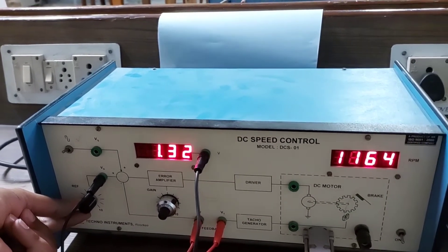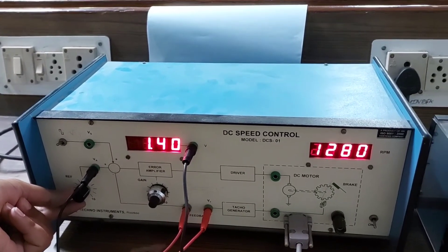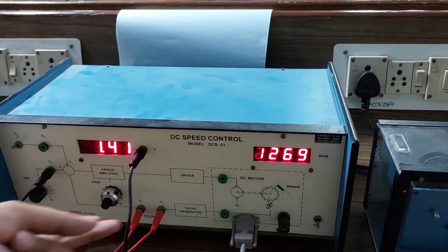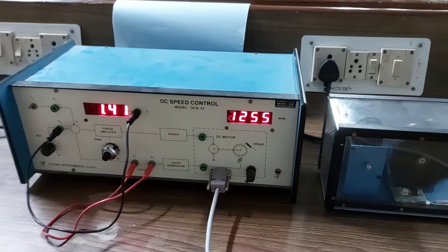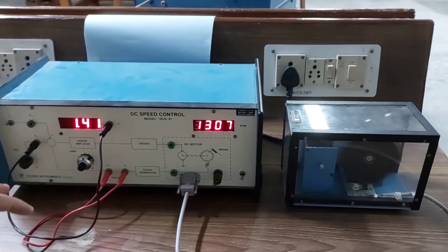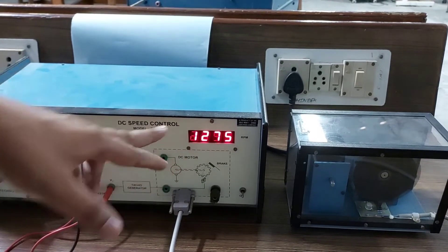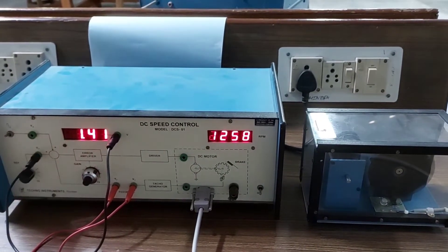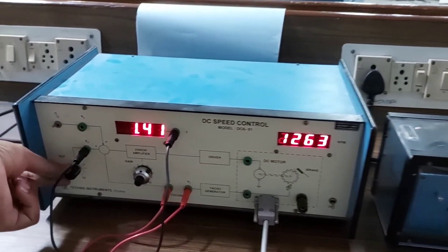As we increase the rotation of the knob, the corresponding RPM also increases. In this practical we are going to prove that when the RPM is 1275 and the reference voltage is 1.40 volts, if we decrease the V reference voltage